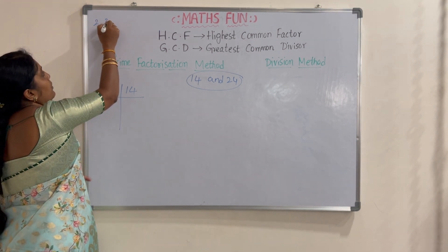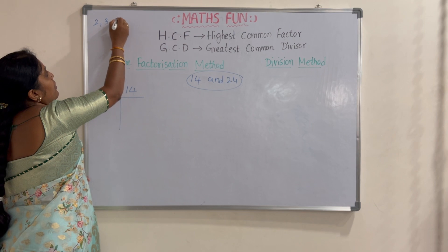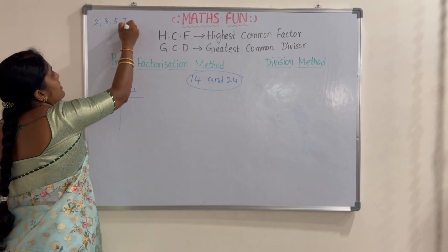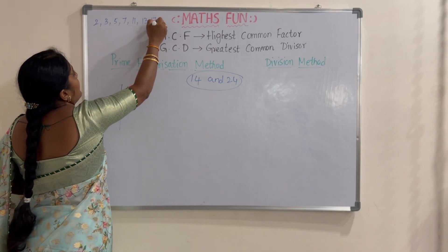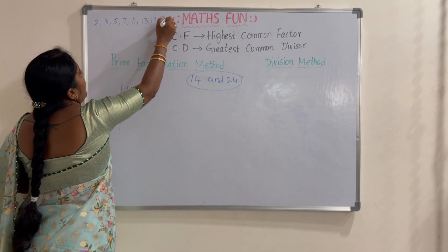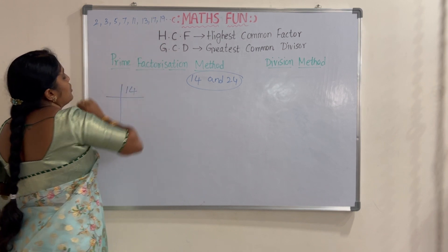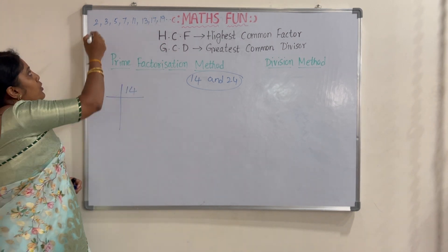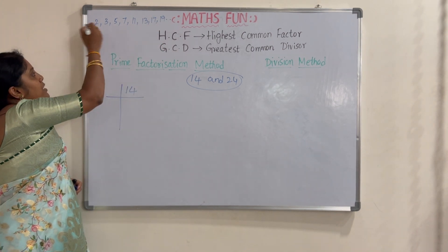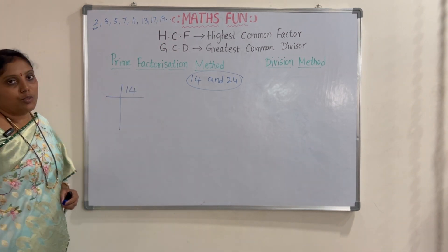Prime numbers are 2, 3, 5, 7, 11, 13, 17, 19, and so on. The first and least prime number is 2.